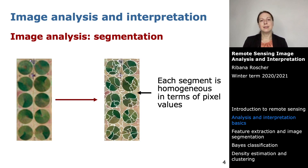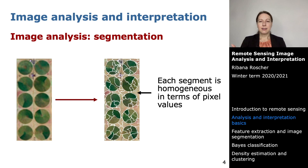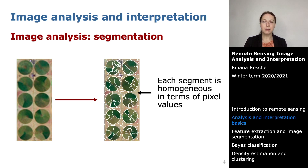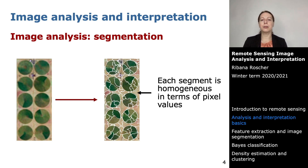Another analysis technique is segmentation. When you do segmentation you group together pixels which are homogeneous in terms of pixel values, looking at which pixels are close to each other and have similar values. Segmentation is very useful because you can replace pixel-wise operations with segment-based operations — for example, assigning a land cover class to a whole segment at once. We will talk about image segmentation more in a future lecture.